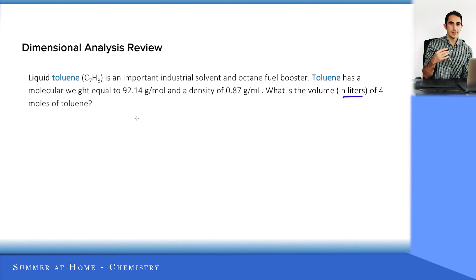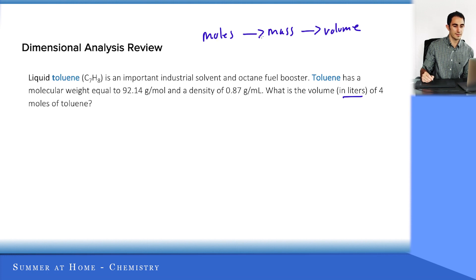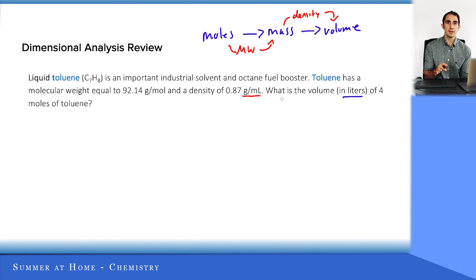Let's do it the same way as the last problem. I want to go from moles, and I'll write an intermediate: I know I can convert from moles to mass, and then from mass to volume. How do I convert from moles to mass? I'll use the molecular weight or molar mass. How do I convert from mass to volume? They give me a density, and density has those units that will help me do that. That's my path.